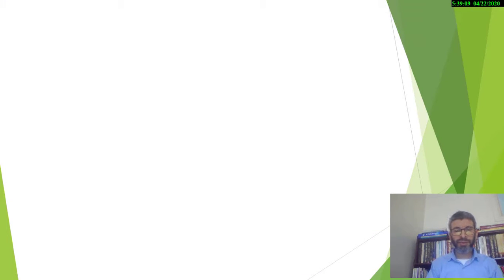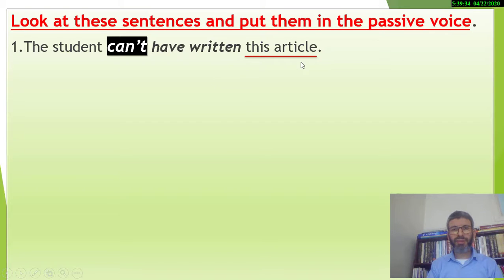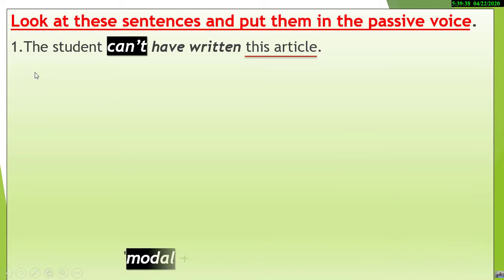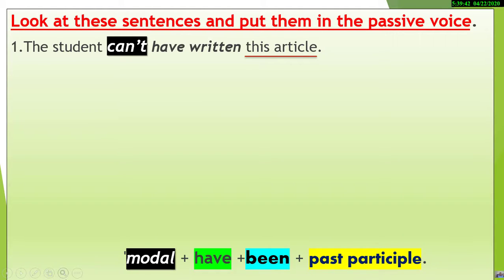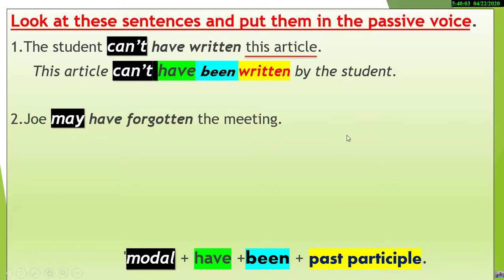Now the next group. Sentence one: 'The students can't have written this article.' The modal is 'can't,' which expresses impossibility in the past. We have a perfect infinitive 'have written.' The object is 'this article.' Applying the rule — modal + have + been + past participle — we get: 'This article can't have been written by the students.'